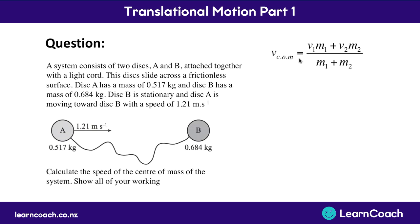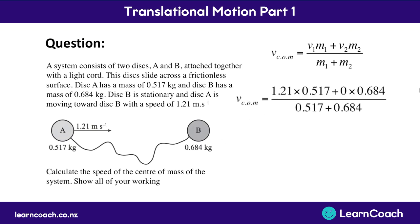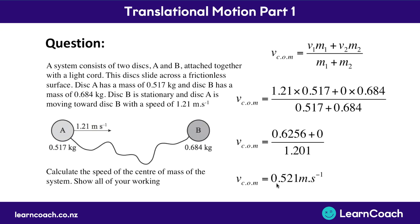Because we've remembered our center of mass formula and we only have two objects, we don't need to add any more on the top or bottom. The velocity of the center of mass is velocity one — 1.21 — multiplied by mass one, 0.517 kg, plus velocity two, which is zero, times mass two, 0.684 kg — still zero when multiplied. Divided by the two masses together. Plugging that into the calculator, you'll end up with 0.521 meters per second. That is the velocity of the center of mass of these two discs.